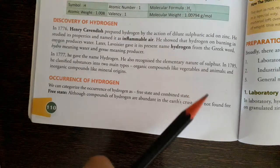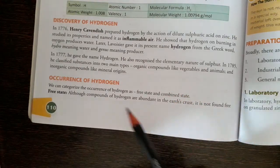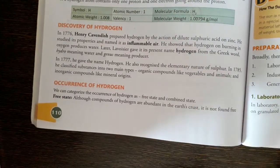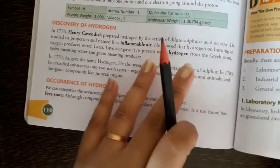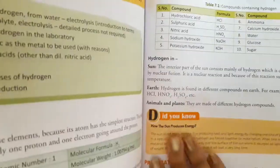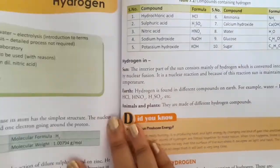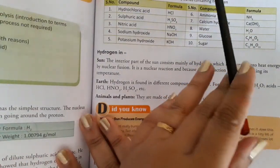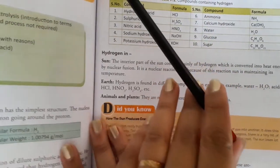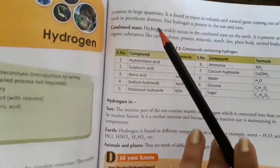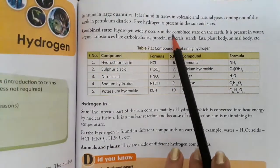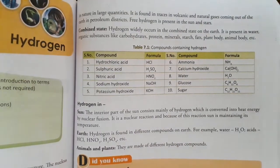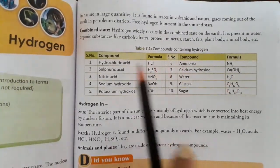Occurrence of hydrogen: How does hydrogen occur? Free state or combined state. Basically in free state, hydrogen is abundant in earth's crust. That's why it is not found in free state. It is found in traces in volcanic gases, and in natural gases coming out from the earth in petroleum districts. Free hydrogen is present in the sun and stars, but in large quantity it is not found in free state.